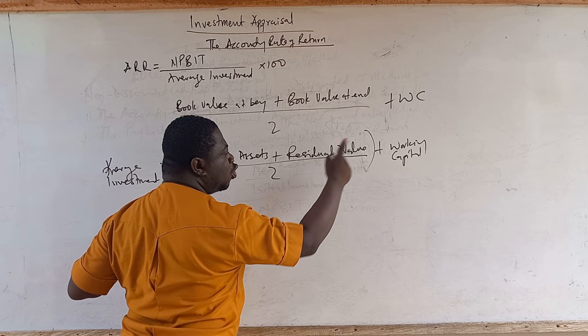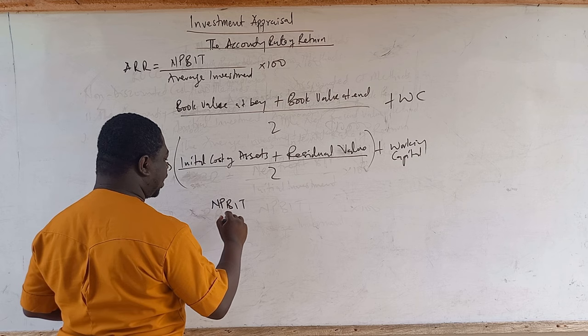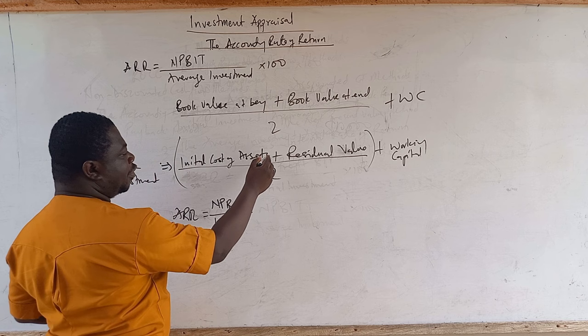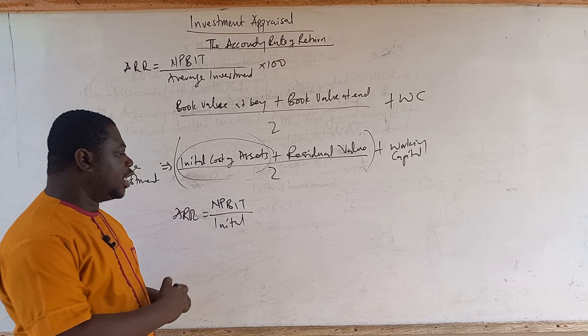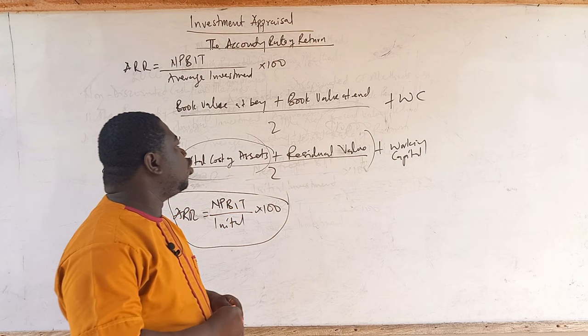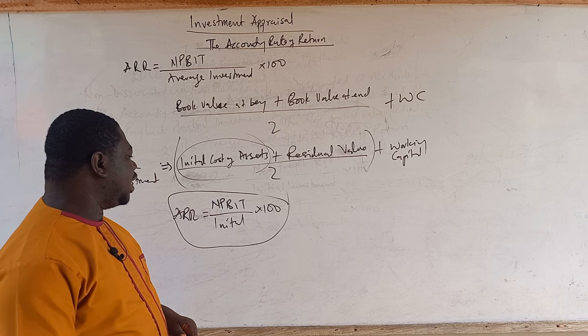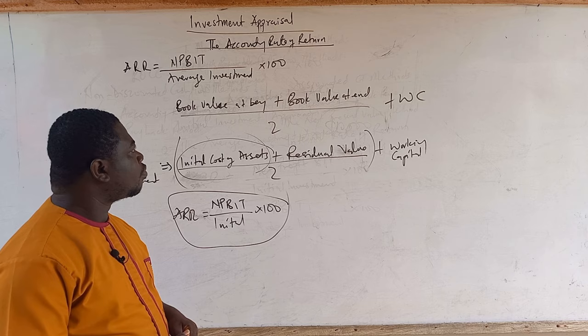The average investment is: initial cost of the asset plus residual value over two, plus working capital. If you are going by the initial investment approach, it is simply net profit before interest and tax over the initial investment, which equals the initial cost of the asset. The average investment approach is more technical and you should expect it in exams more than the simpler initial investment approach.